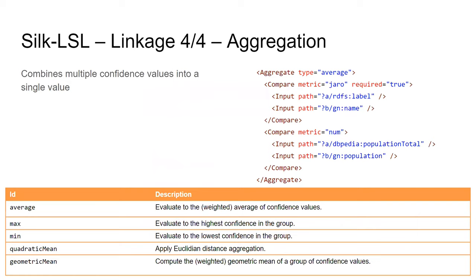The fourth and final stage is aggregation. If you compared names of directors, movie titles, and other things for two movies, you get multiple confidence values. Aggregation methods include maximum, minimum, average, or other means to combine those into one final confidence value.